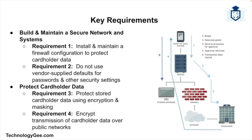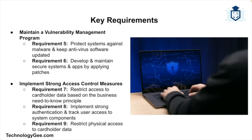PCI DSS comprises 12 requirements organized into six control objectives designed to establish and maintain a secure environment for payment card data. The first control objective is building and maintaining a secure network and system. Requirement one is to install and maintain firewall configurations to protect cardholder data. Requirement two is to not use vendor-supplied defaults for system passwords or other security parameters. Under protecting cardholder data, requirement three is to protect stored cardholder data, and requirement four is to encrypt transmissions of cardholder data across open public networks.